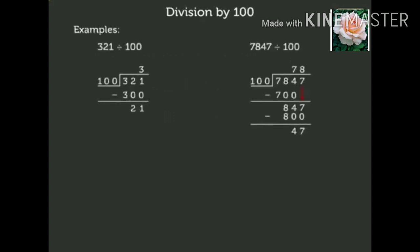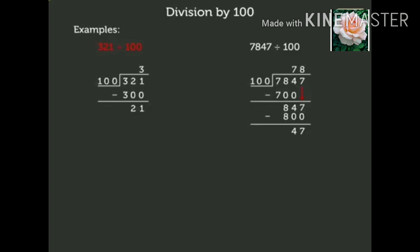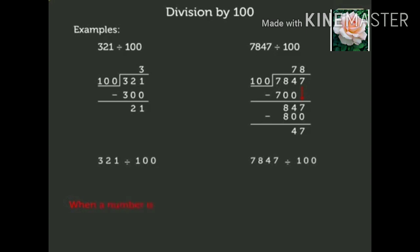Next is division by 100. Look at the board. We have solved two examples again by the division method. Look at the first example: 321 divided by 100. Here we got the quotient as 3 and the remainder as 21. Now look at the second example. Here we got the quotient as 78 and remainder as 47. In these examples, when we divided both the numbers by 100, the ones and tens digits of the dividend formed the remainder and the remaining digits form the quotient.